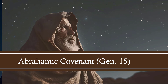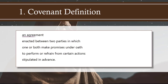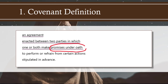Let's do a quick review of the covenant definition. A covenant is an agreement — God doesn't force you into it. There are two parties on either side of the agreement, and one or both make promises under oath. Tonight we'll look at this idea of promises under oath, the mechanism for making an oath back then, and the promise to perform — certain actions all stipulated in advance.